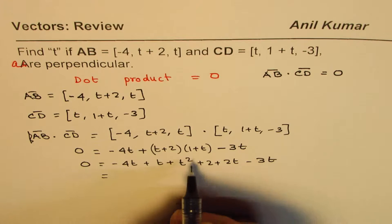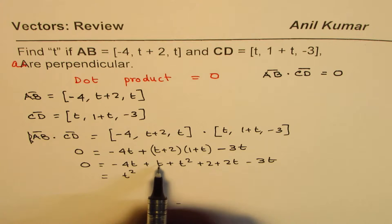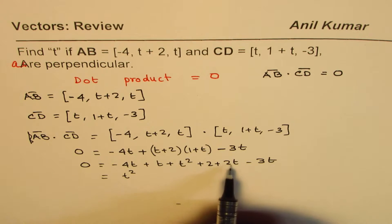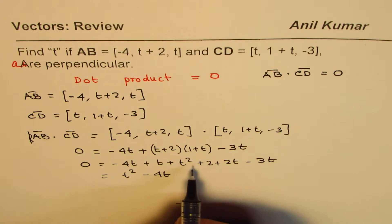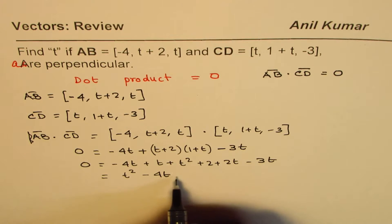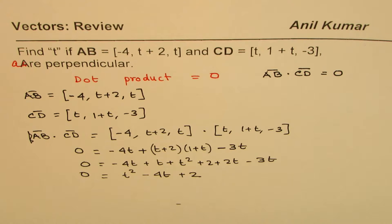Combining the terms, we have t square. As far as t terms are concerned, minus 4 plus 1 is minus 3, minus 3 plus 2 is minus t, minus t minus 3 is minus 4t. As far as constants are concerned, we have 2. So, we have t square minus 4t plus 2 equals 0. That's the equation.